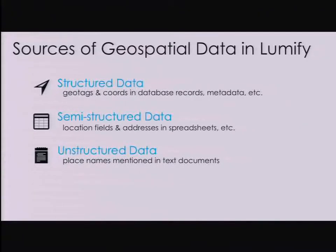We focus a lot of time and energy on semi-structured and unstructured data, where we need to do work to extract and enrich geospatial information. An example of semi-structured data would be a spreadsheet with columns for city, state, and country — just strings in those fields. It provides some structure, but we have to do work before we can assign that to a point in space to put on a map. Unstructured data — text documents like emails, news reports, Wikipedia pages — requires us to identify places mentioned in the text, disambiguate them, and resolve them to gazetteer records to allow us to put them on the map.